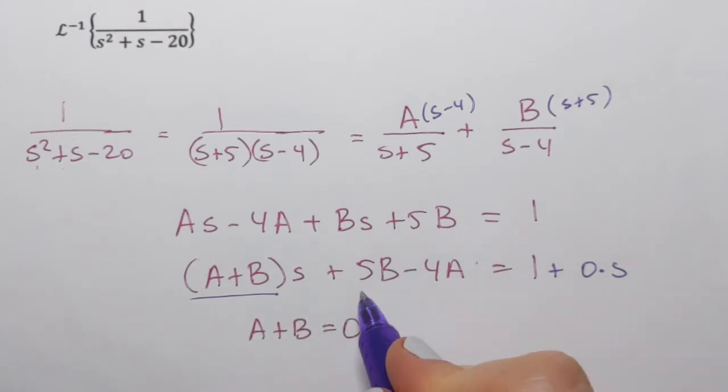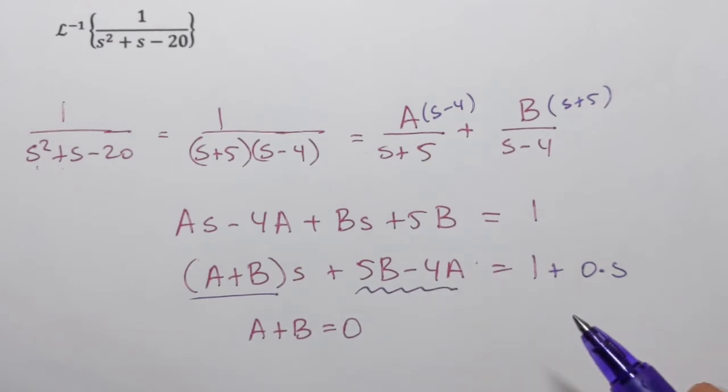And then the constant, the constants, 5b minus 4a, should be equal to the constant on the right-hand side, which is 1. So 5b minus 4a equals 1.